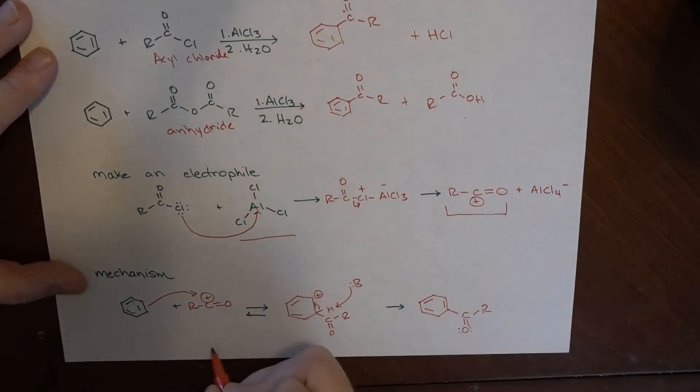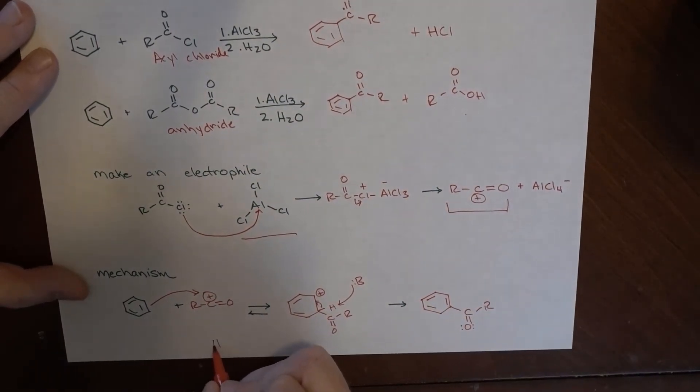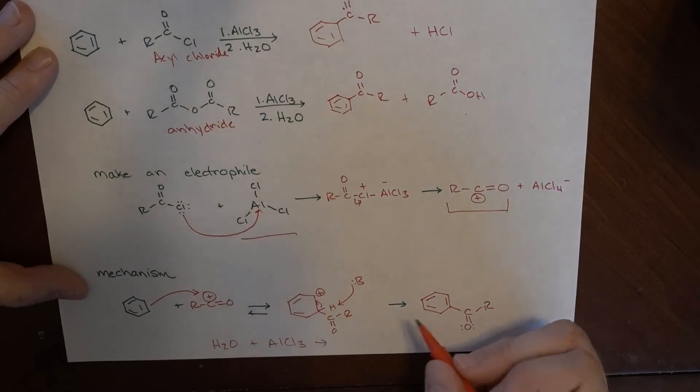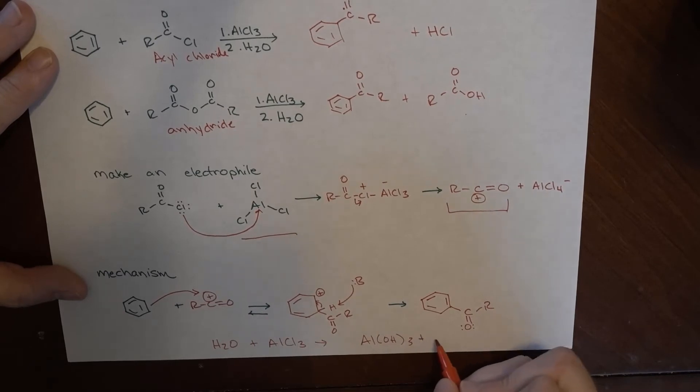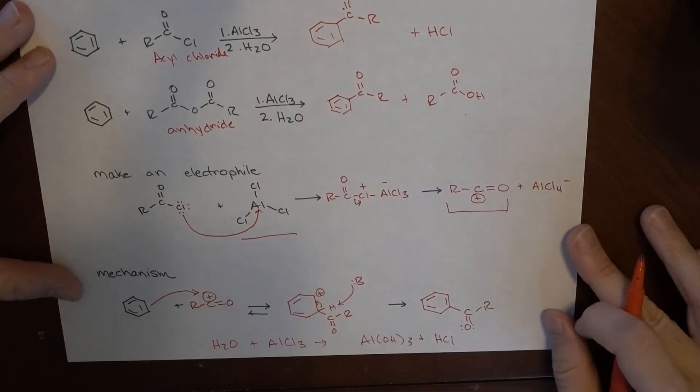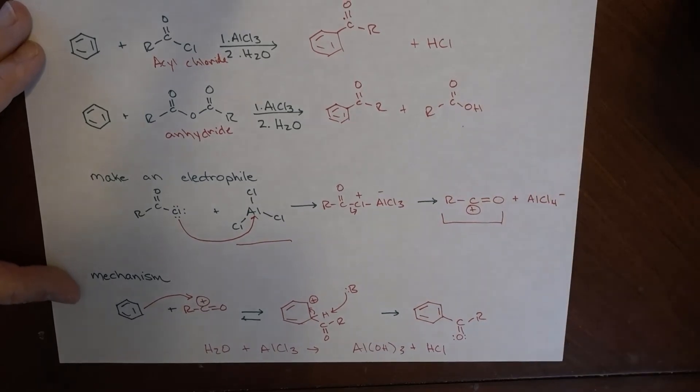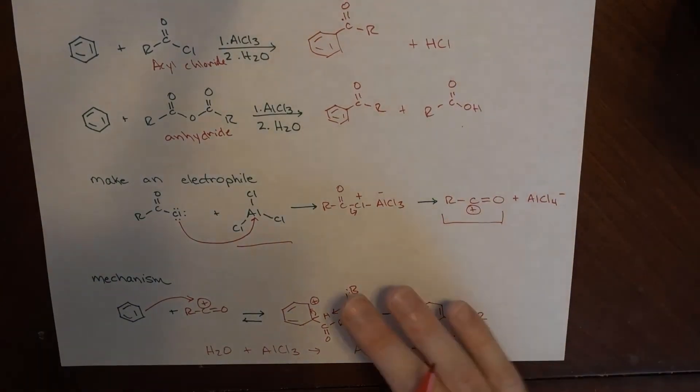And so what we do is to wash it out. So when the reaction is done, we add a bunch of water because water will react with AlCl3 to make aluminum hydroxide, fairly unreactive, and hydrochloric acid. So we use that to sort of wash things out there when we're done. So it's a good way to do that. So that's the acylation.